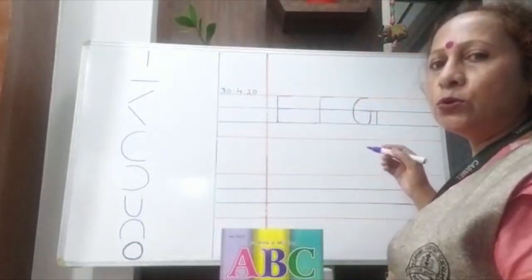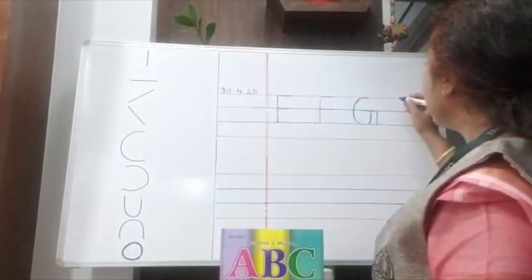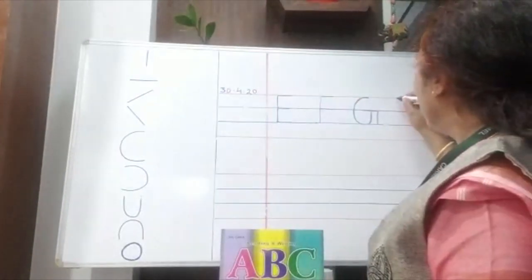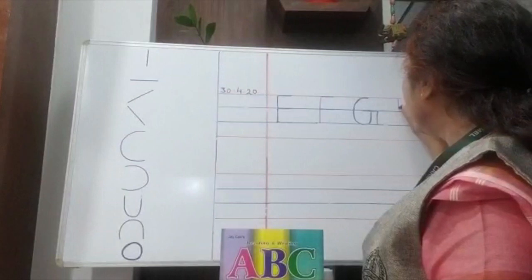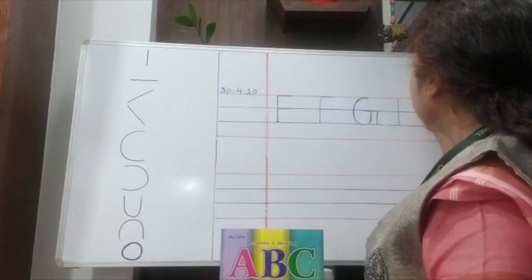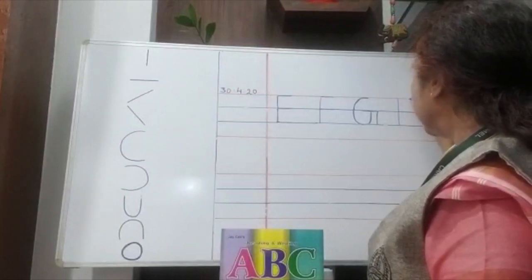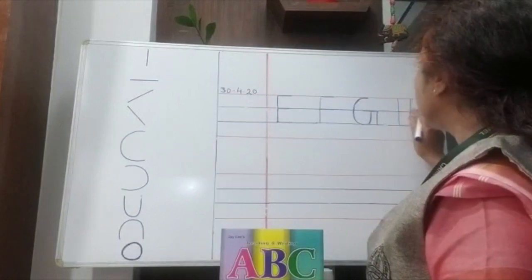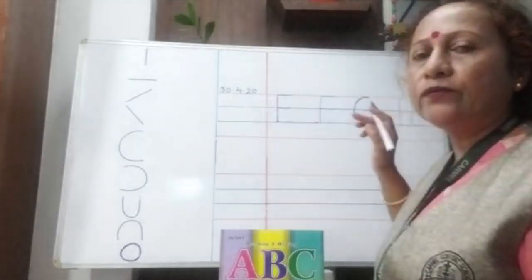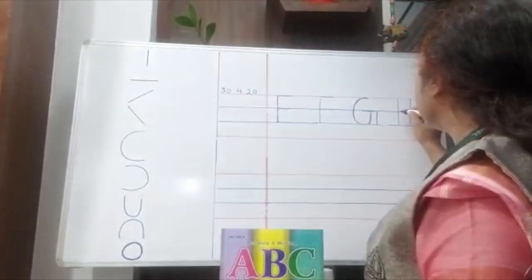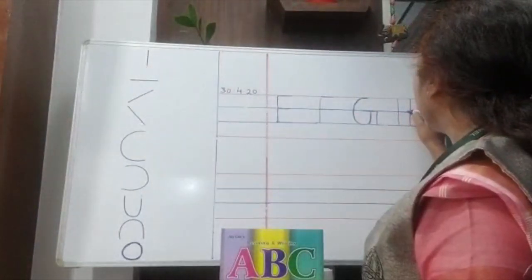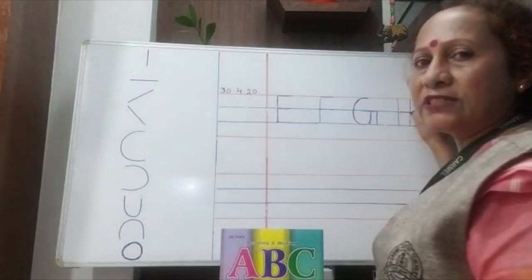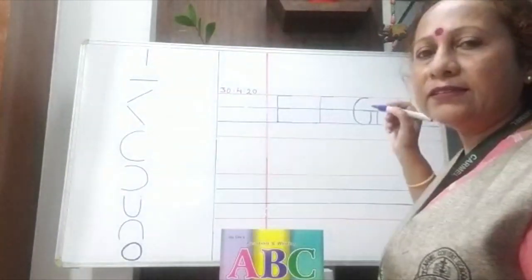Now come to H. How to make H? You have to make two standing lines — first standing line from red line to blue, and another standing line from red line to blue. And you have to join these two standing lines with one sleeping line. This is H.